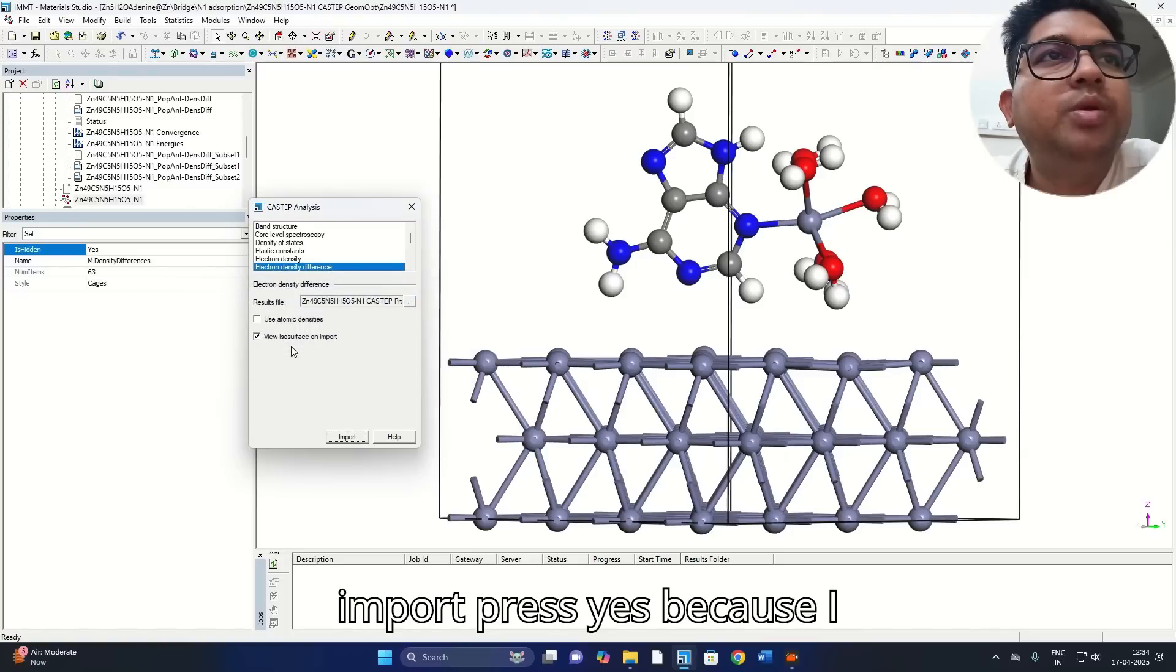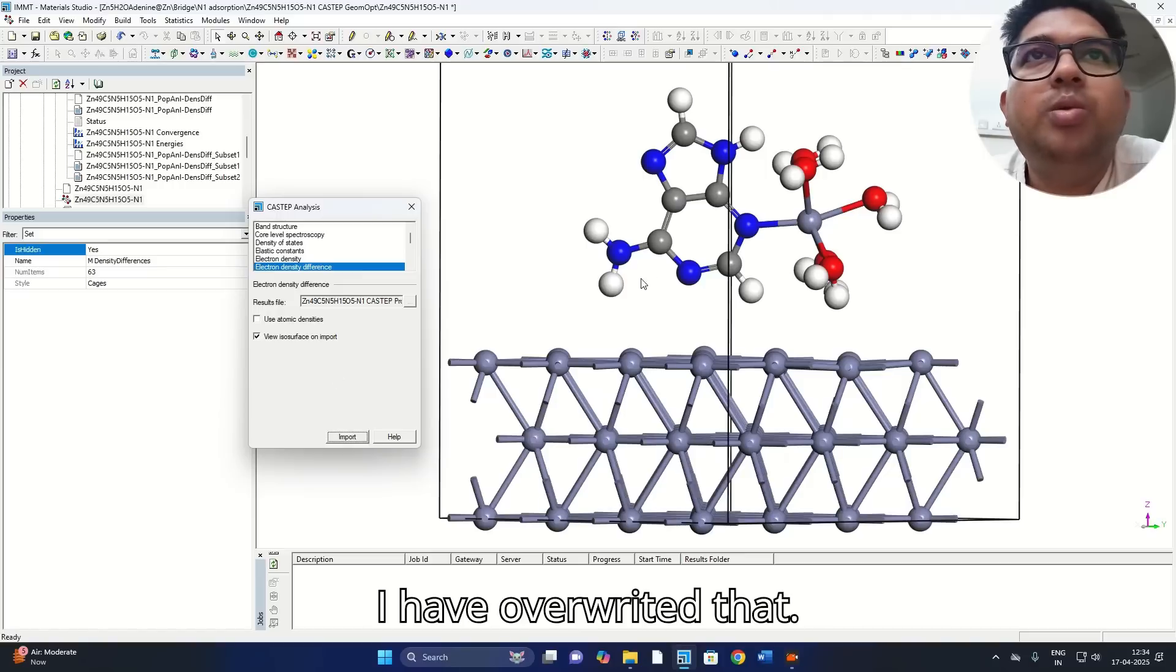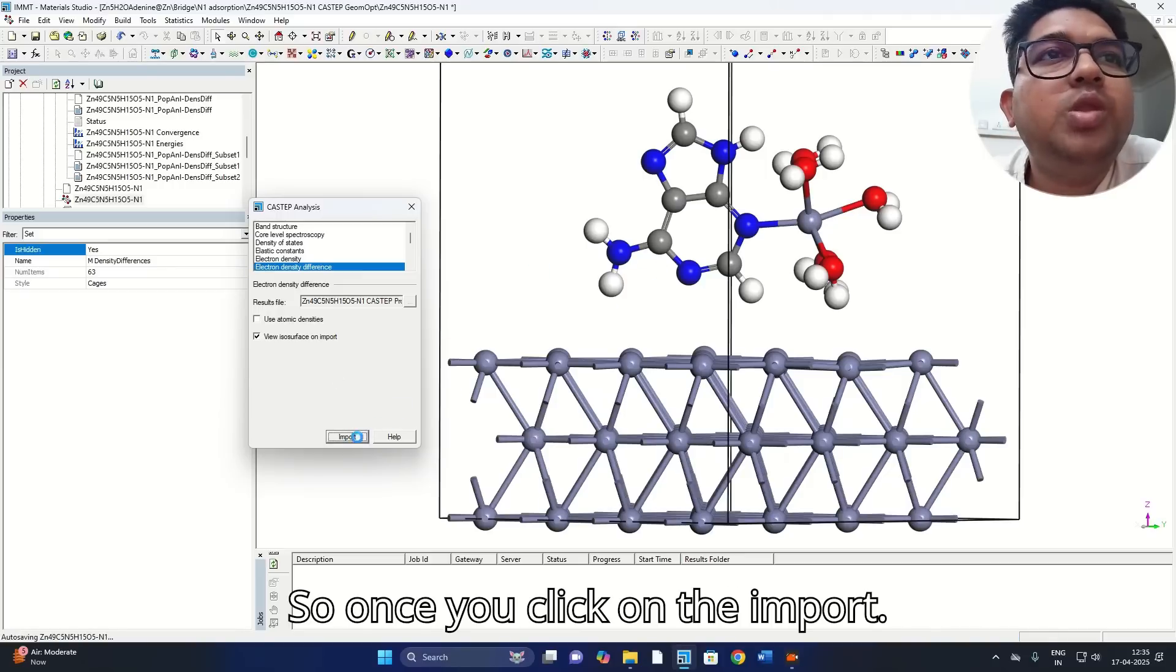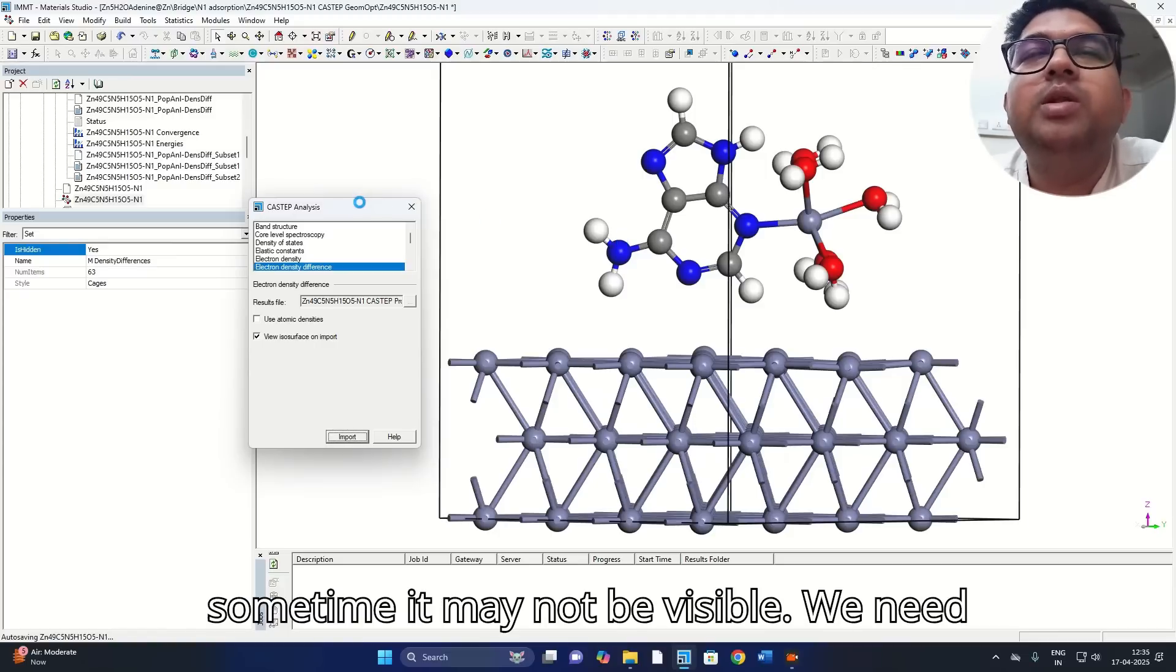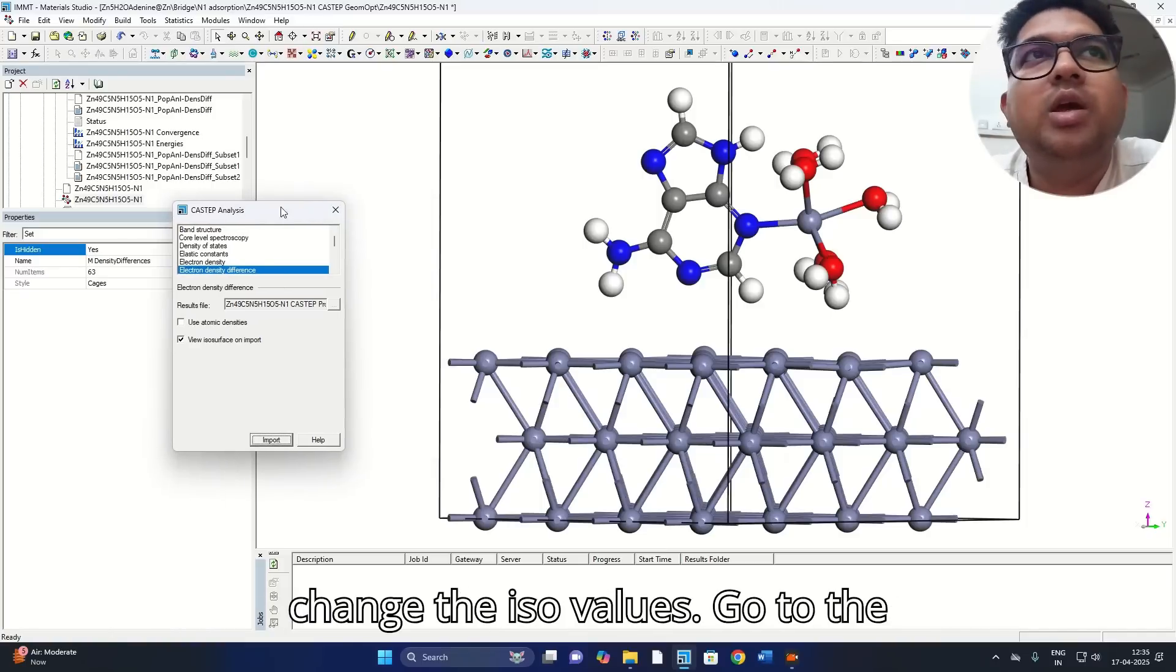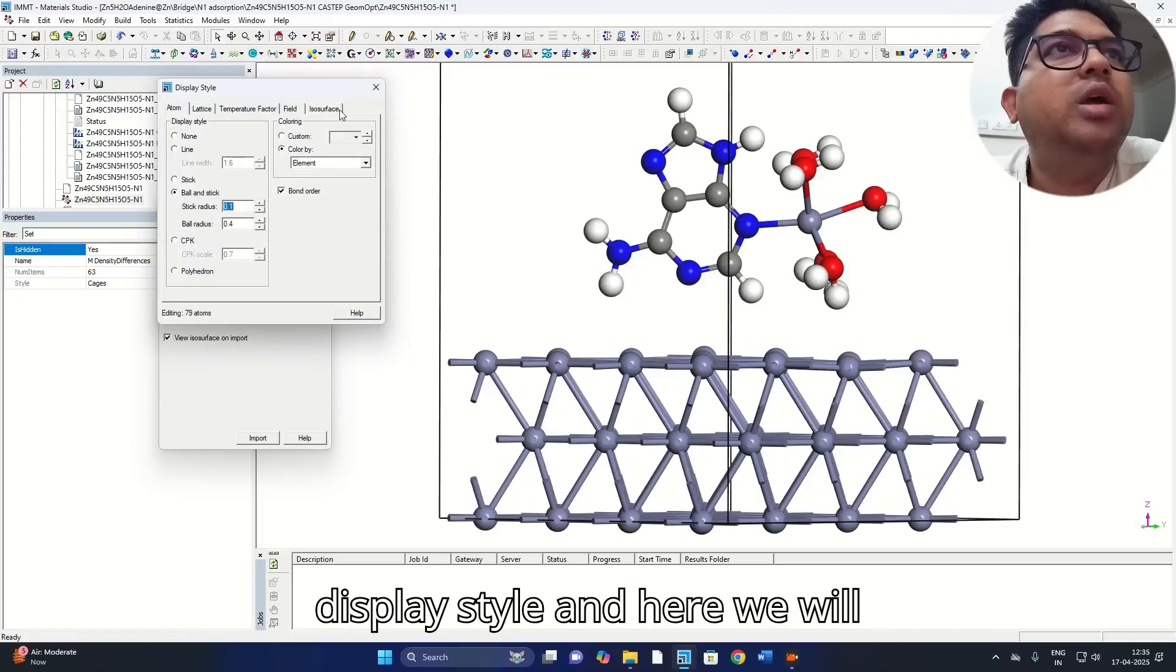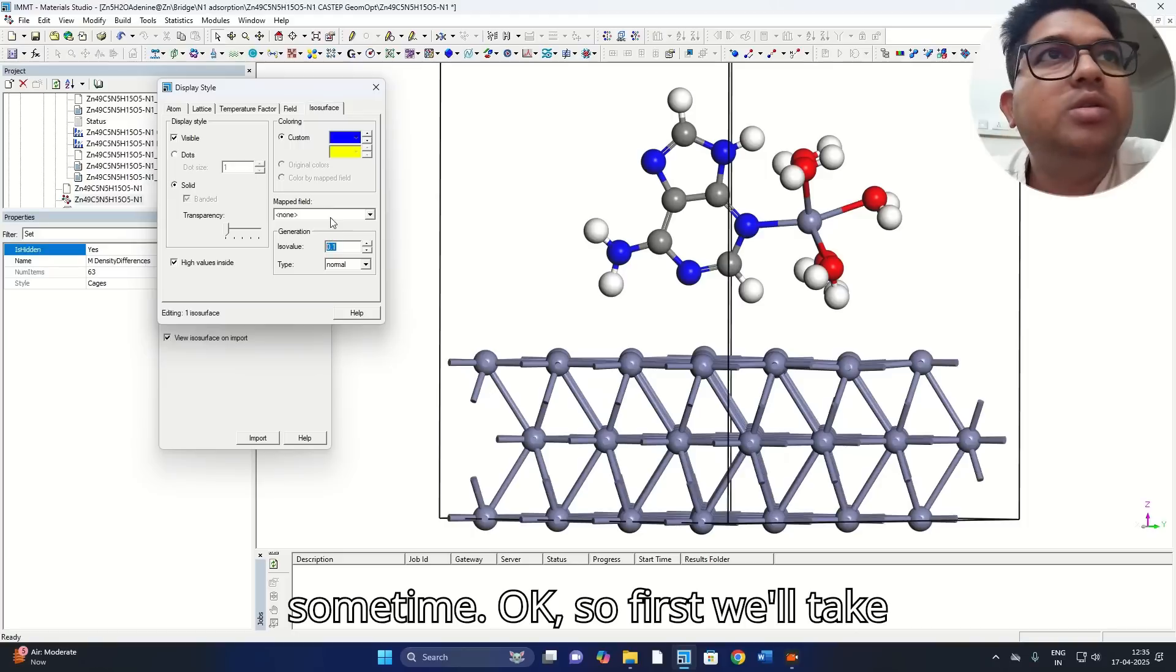I'll just click on import, press yes because I have already generated so it was showing I've overwritten that. So once you click on the import, the iso surface will be imported but sometimes it may not be visible. We need to go to the display style and we need to change the iso values. Go to the display type and here we go to the iso surface.